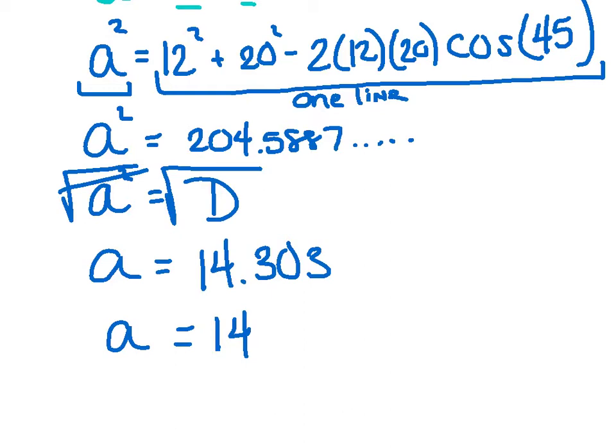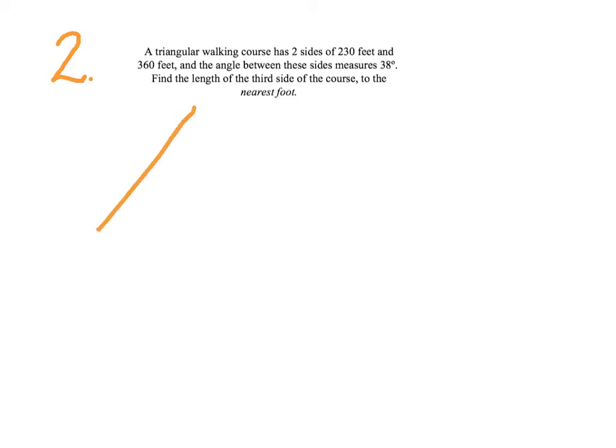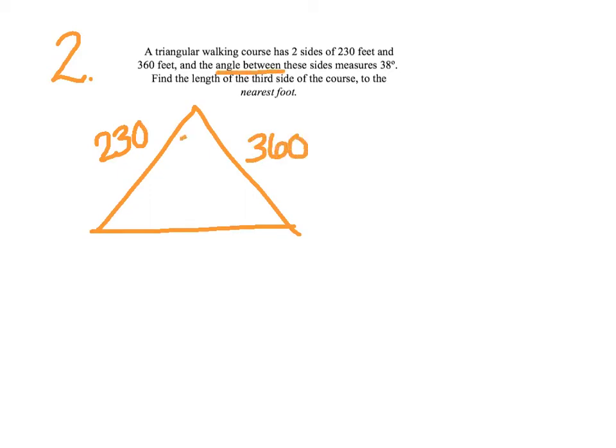And you've done it — that's our law of cosines. Let's try another one. Number two: a triangular walking course has two sides of 230 feet and 360 feet, and the angle between these sides measures 38 degrees. Find the length of the third side of the course to the nearest foot. I'm going to start with a quick sketch — they told me two of the sides: 230 feet, 360 feet, and the angle between them is 38 degrees.